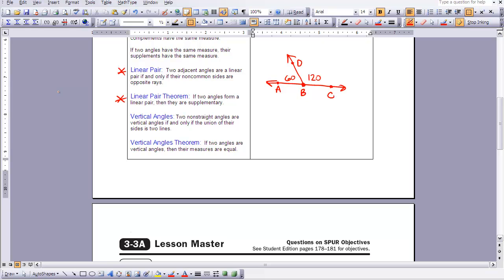And if I have a linear pair, because those non-common sides form a line, then I know that that line is 180 degrees, which would then match the definition of supplementary angles, which is the two angles add up to 180 degrees. So this linear pair theorem you will use often to help you find angle measures in different diagrams.